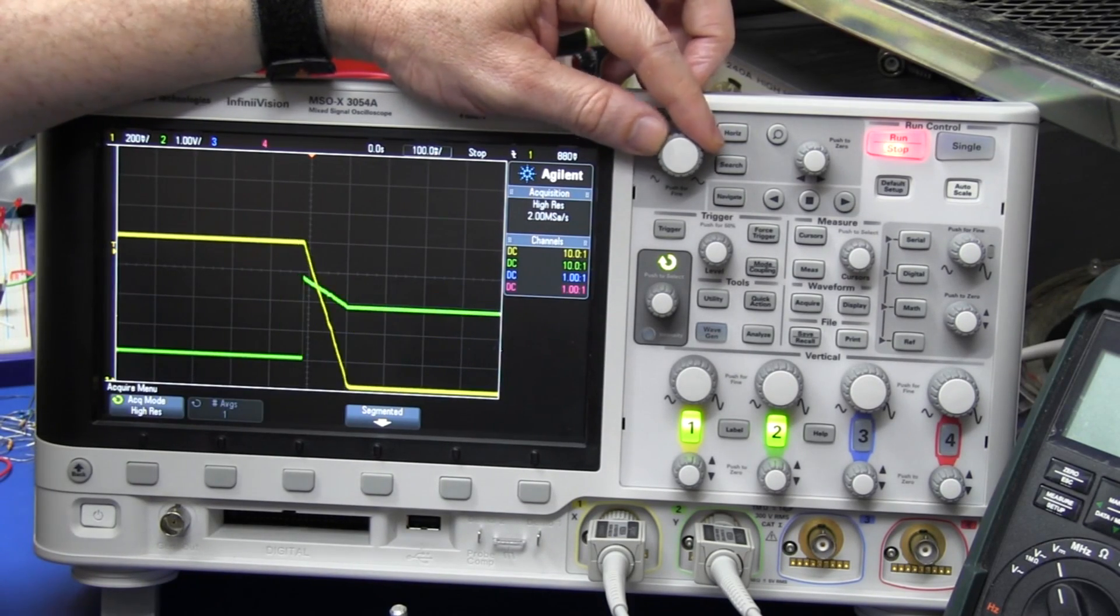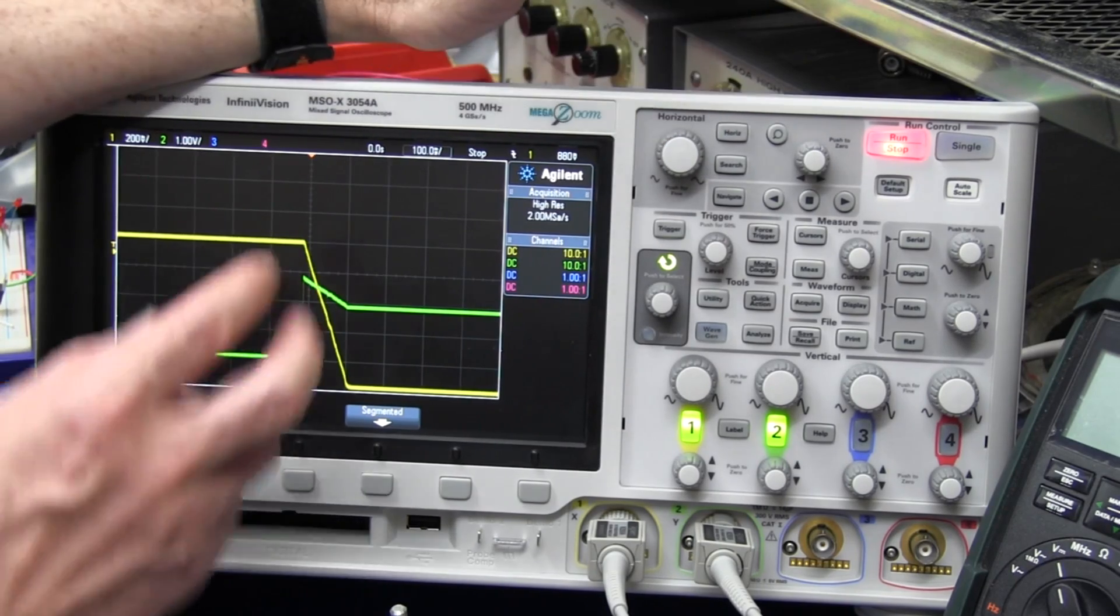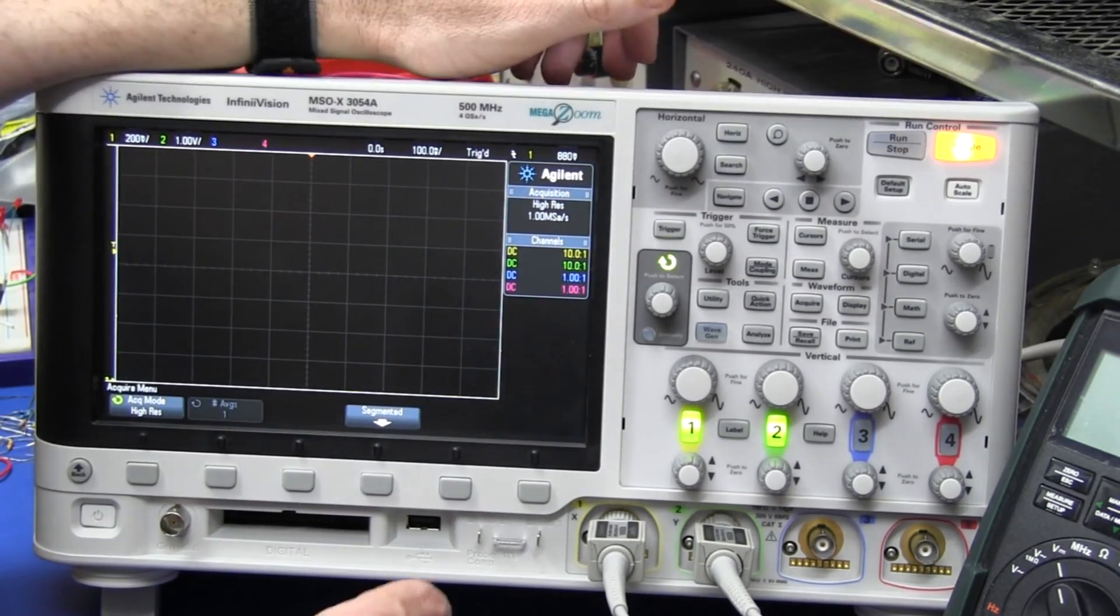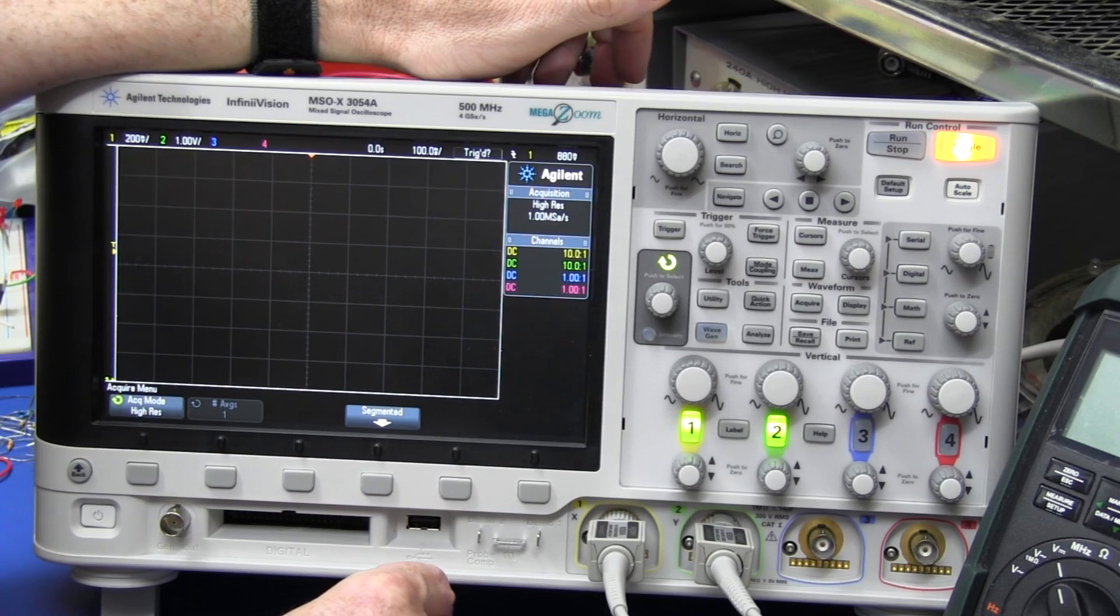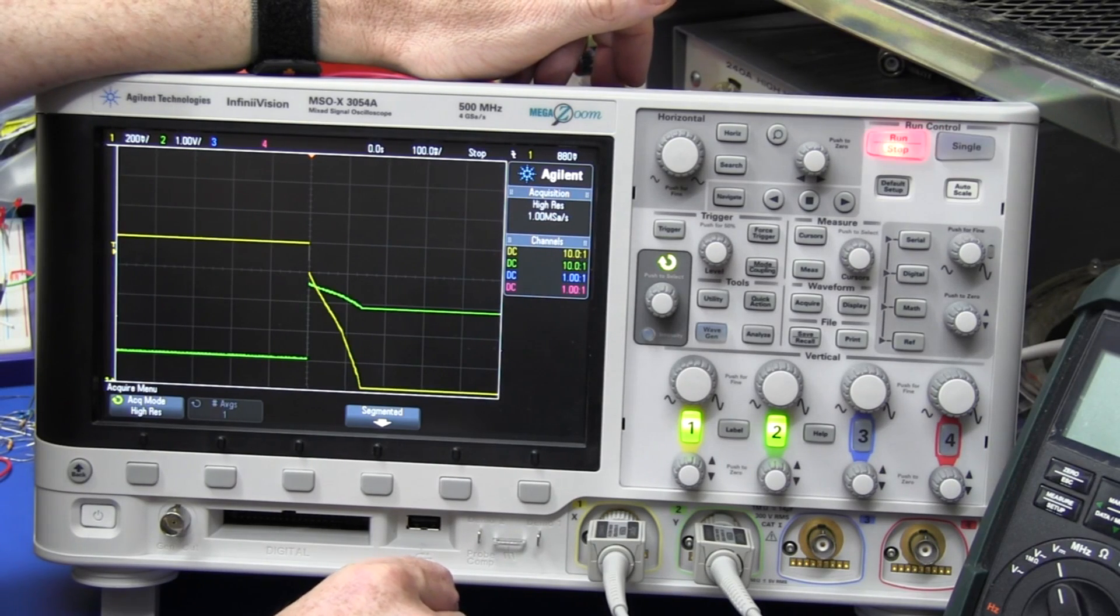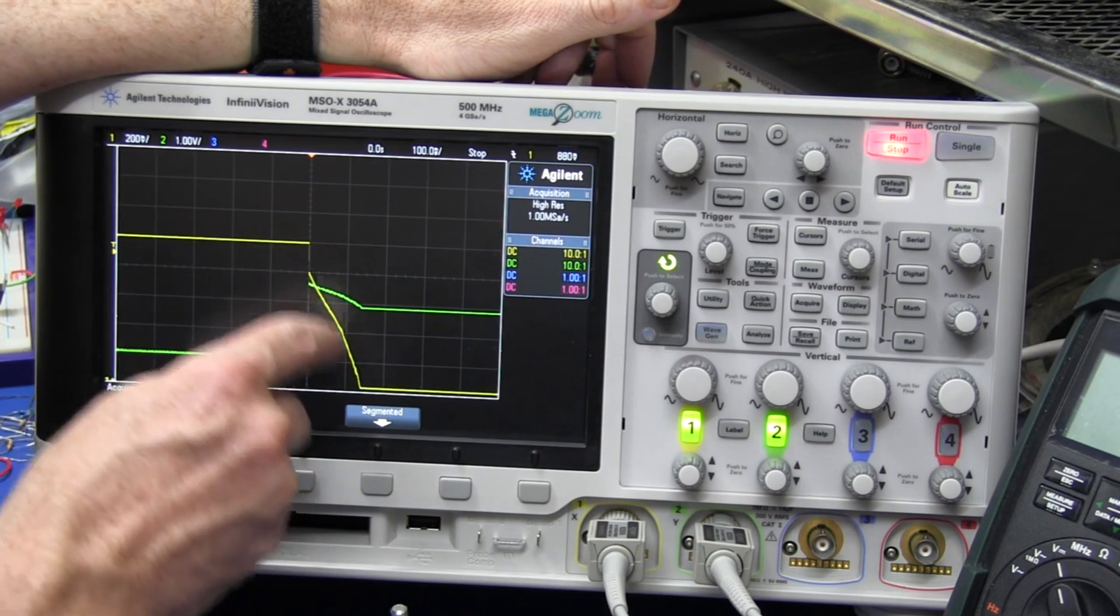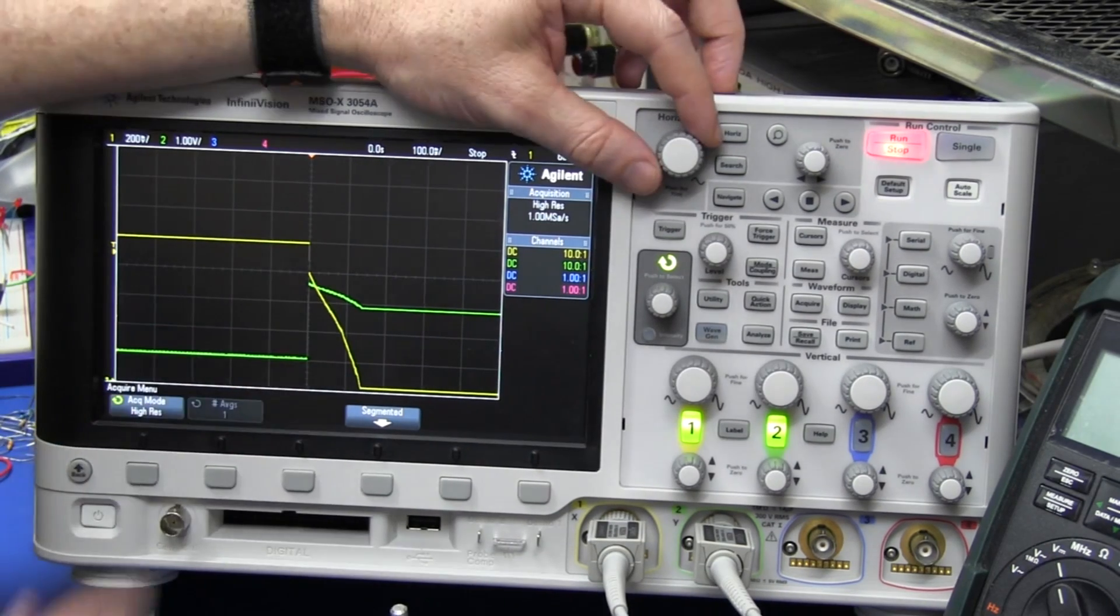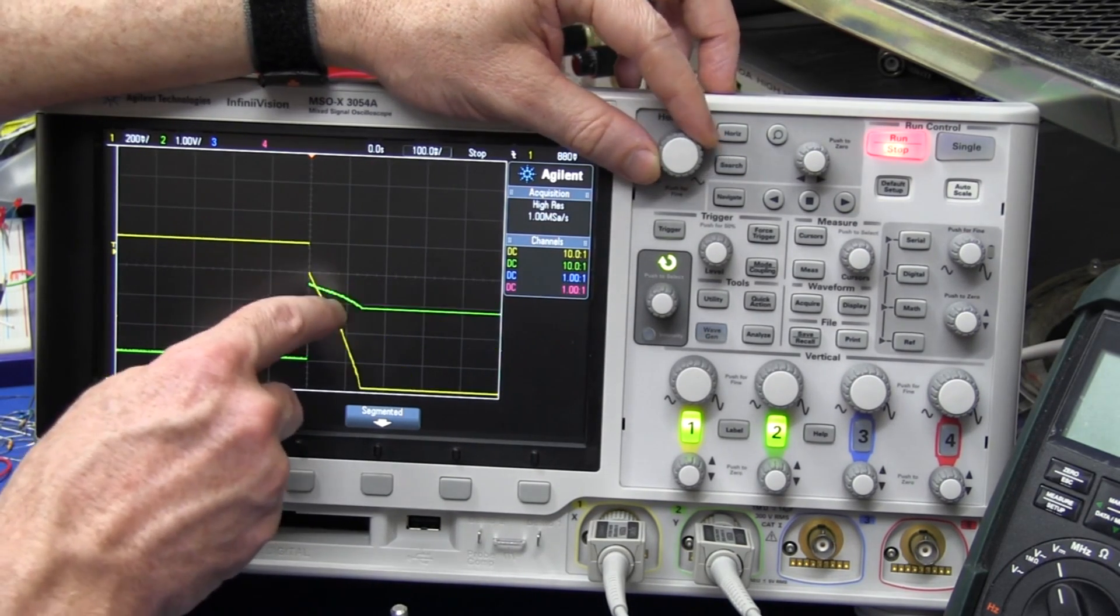So, a relatively slow changing signal which we're going to single shot capture. Let me single shot capture that, and bang. Both of these curves look quite smooth and nice, okay?